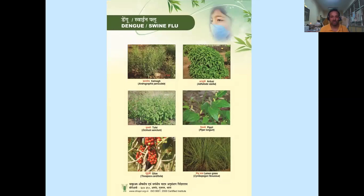For dengue and chikungunya, plants that have been effectively used include Kalmegh, Adusa, Tulsi, Pippali, Giloy and Lemongrass, which have been extensively used in curing these diseases.